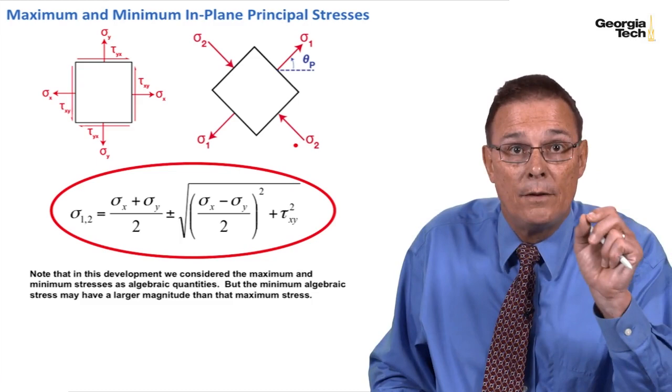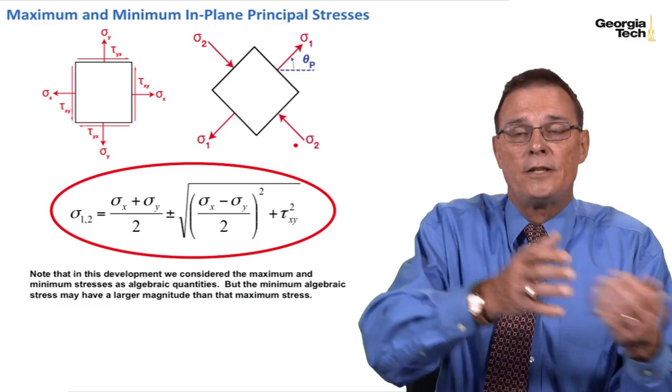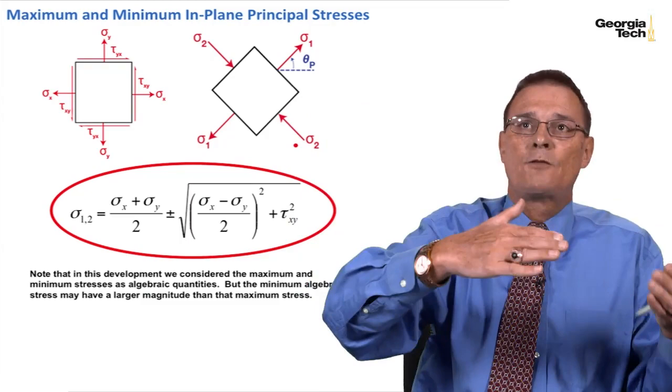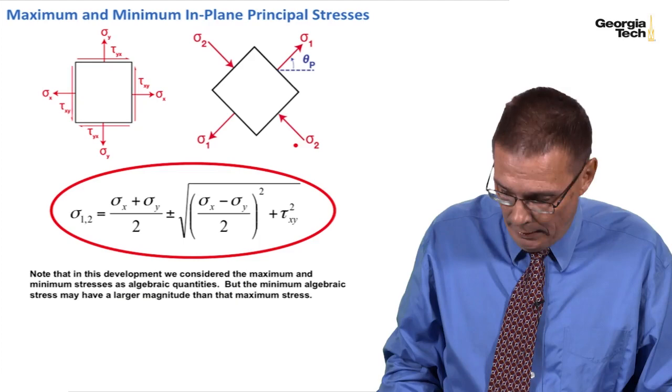But you'll note in this algebraic development I've considered max and mins to be algebraic quantities. And so as I said they could both be positive. I might have plus 1500 and plus 500 or I might have plus 800 and minus 200 or I might have minus 400 and minus 1700.